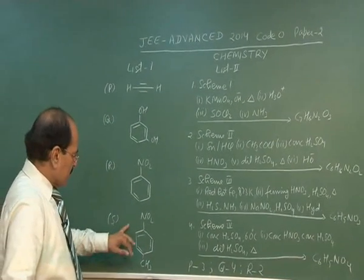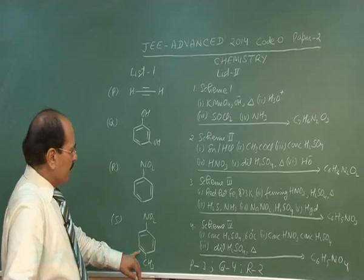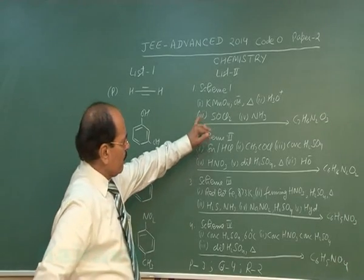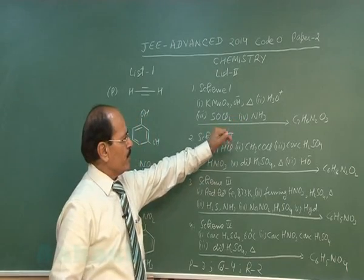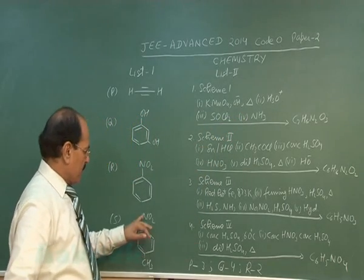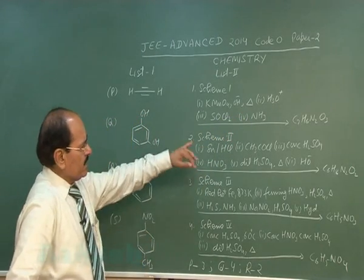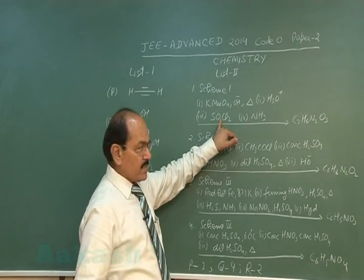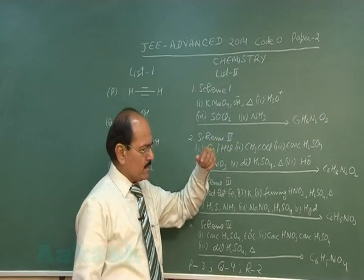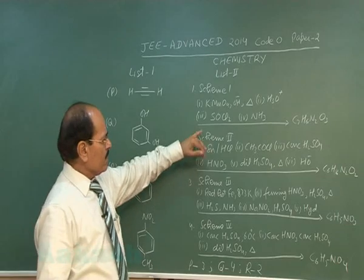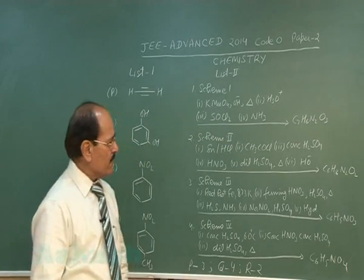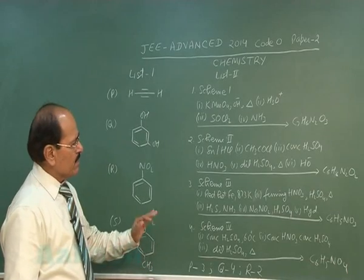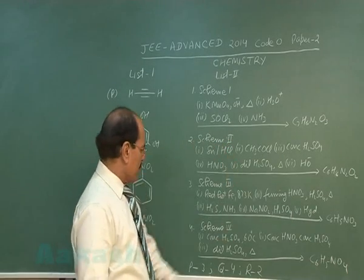The last compound is para-nitrotoluene. Para-nitrotoluene is subjected to oxidation by alkaline KMnO4 at high temperature followed by acidification. We get para-nitrobenzoic acid. Para-nitrobenzoic acid reacts with thionyl chloride forming para-nitrobenzoyl chloride, and that reacts with ammonia forming para-nitrobenzamide. That is the final product.